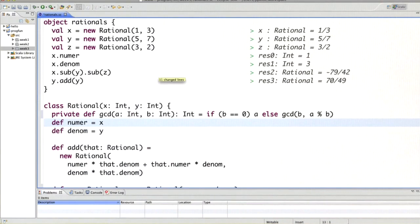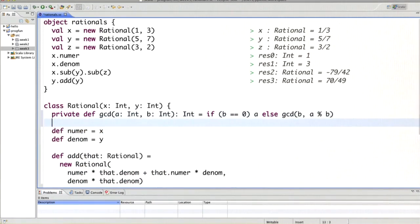What's important is that I put the modifier private in front of it because I do not want that clients of class rational can see gcd. It's strictly for implementation purposes here. The next thing I do is I define a private value g which is the greatest common divisor of x and y, and then when I create the numerator I say the numerator is x divided by g and the denominator is y divided by g.